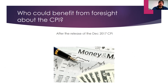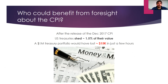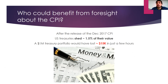For example, after the release of the December 2017 CPI, the US Treasury shed about 1.5 percent of its value, and a one million dollar Treasury portfolio would have lost about $15K in just a few hours — and that's only the direct effects. As of this recording in early February 2018, we've just seen a massive sell-off in the stock market triggered as a result of higher-than-expected inflation measured by the CPI.